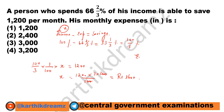They are asking us to calculate the expenditure. The expenditure is equal to income Rs.3600 minus savings Rs.1200, which equals Rs.2400. So the monthly expense is Rs.2400.